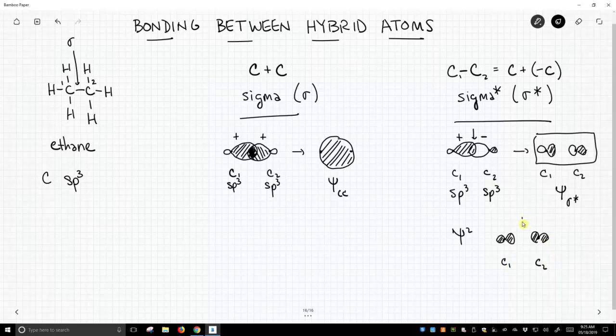And so we can see, where is the electron density? Well, it is not in the middle because in between we have a node. So this would be an anti-bonding orbital, therefore it's our sigma star.